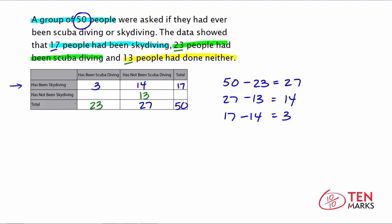Now let's find the number of people who have not been skydiving but have been scuba diving. The total for scuba diving is 23, and we subtract the 3 who have been skydiving: 23 minus 3 equals 20. So 20 people have been scuba diving but not skydiving. Finally, the total number who have not been skydiving is 20 plus 13 equals 33, and 33 plus 17 also equals 50, confirming our answer is correct.